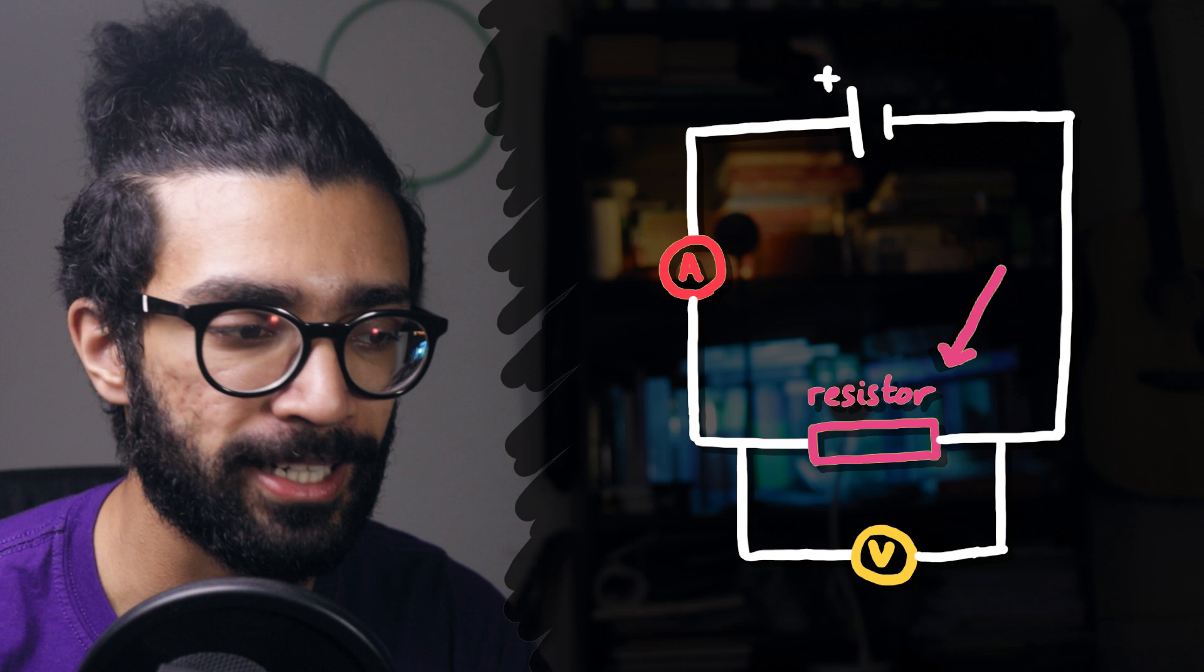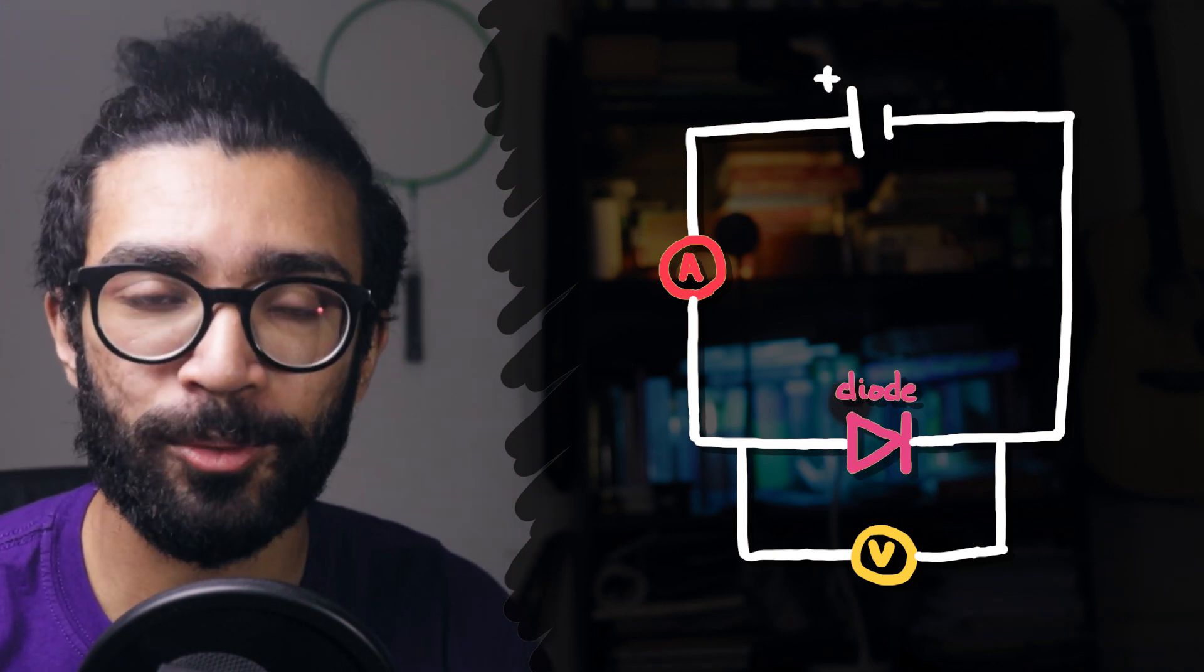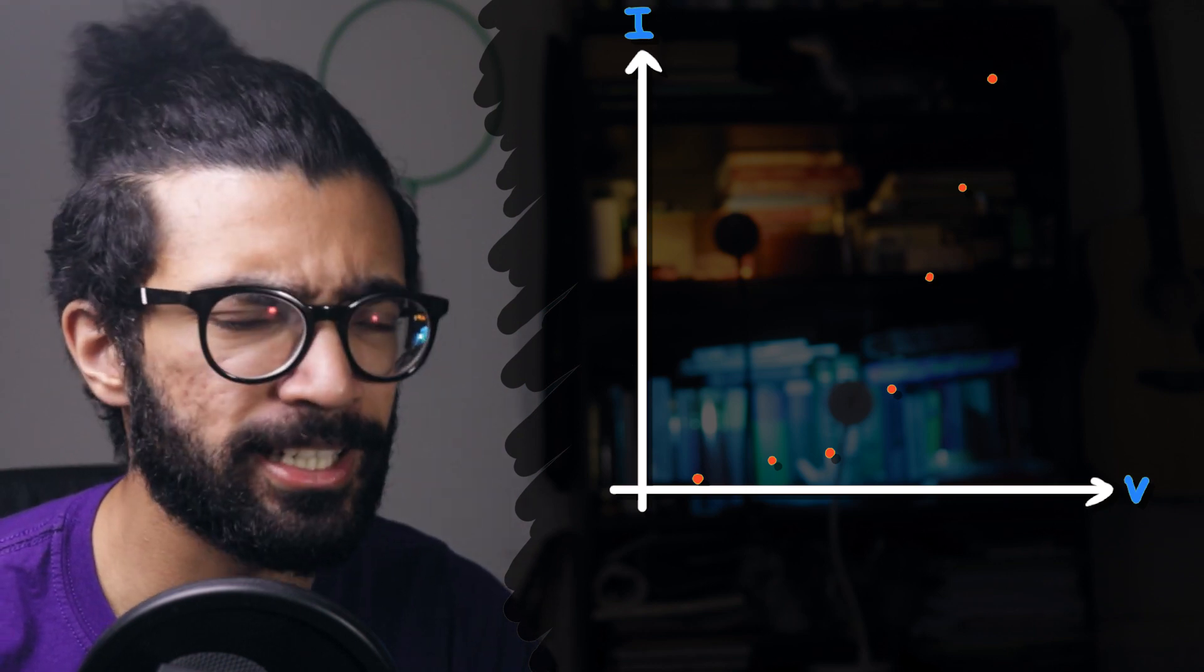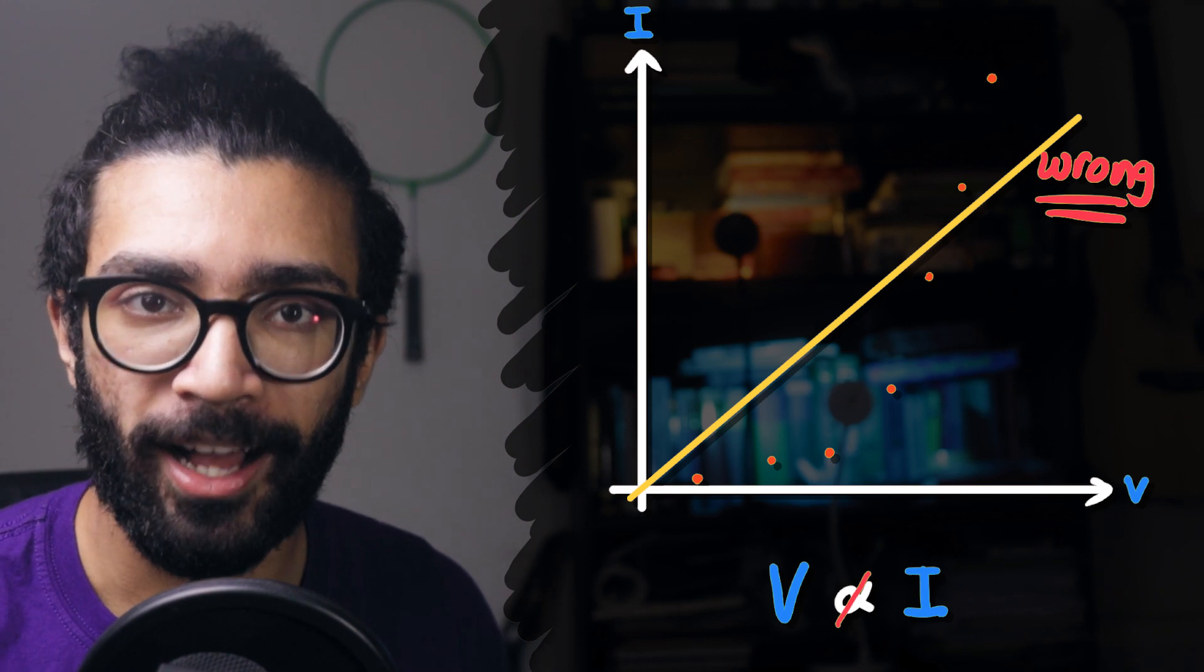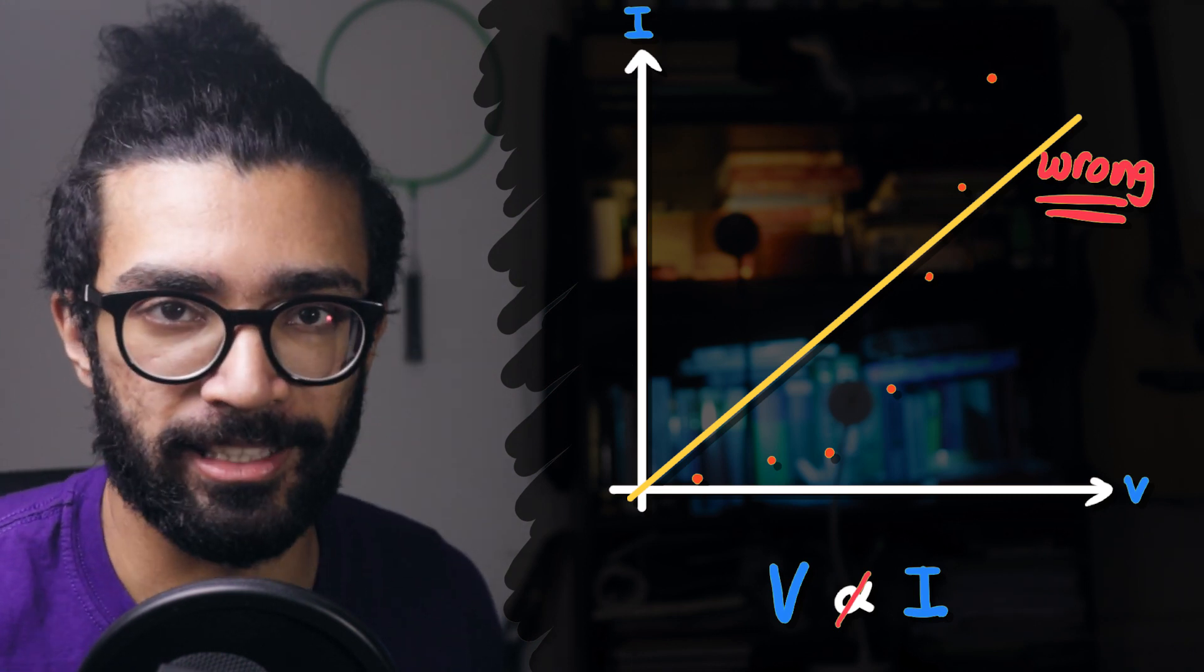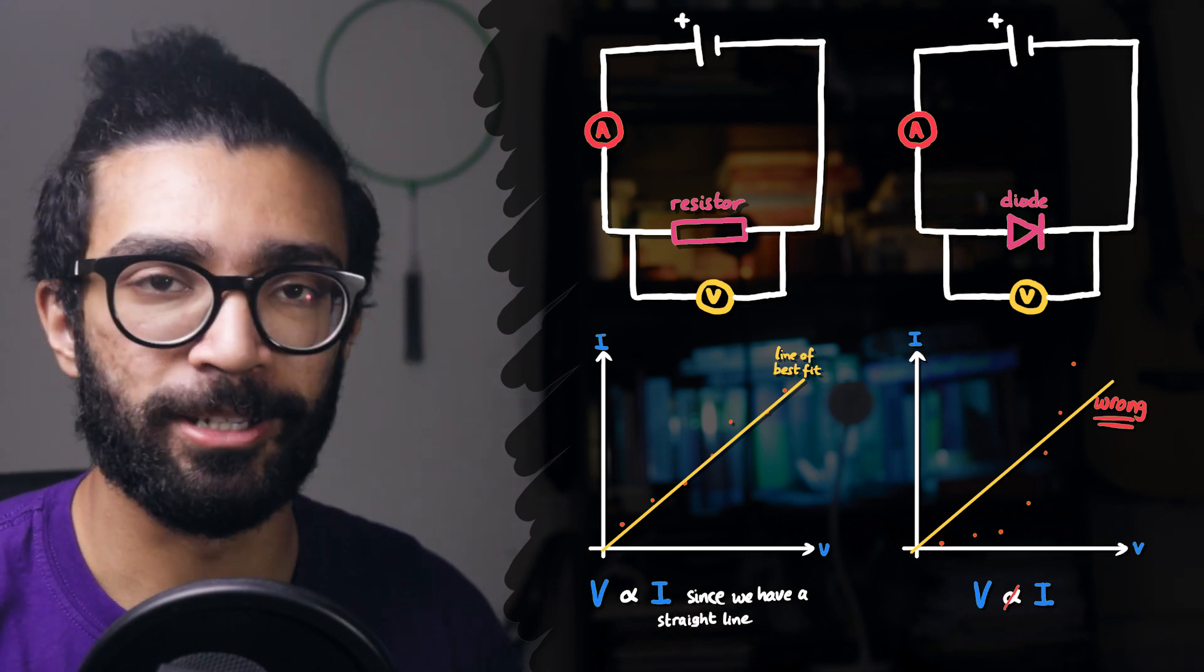For example, instead of a resistor, if we had a diode in our circuit, then our current versus potential difference graph would look like this. We're not fitting a straight line to that anytime soon. In this case, we can clearly say that V is not proportional to I. And this is relatively easily done. We can either confirm or deny our hypothesis based on the experimental results.